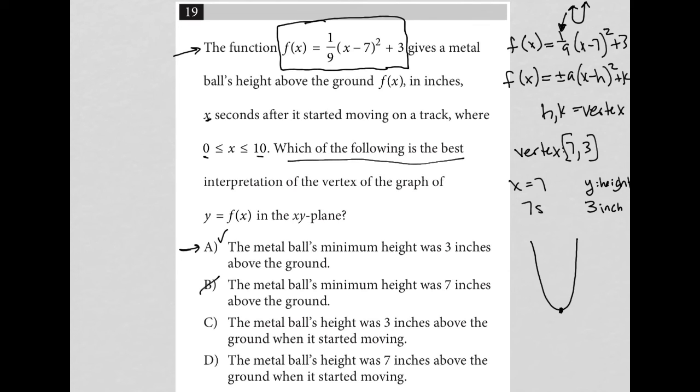Choice D: The metal ball's height was seven inches above the ground. Nope, seven has to do with time, not inches. So D is gone. A is the best answer to this question.